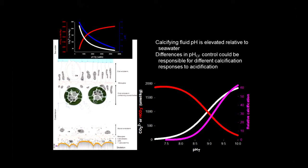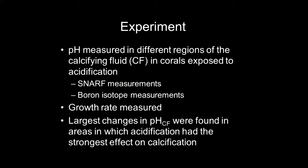Certainly, corals are able to upregulate pH under a wide range of external CO2 conditions, but clearly there are variations in how calcification responds. So the question is: how variable is this pH regulation in corals? To investigate this, we used two techniques — in-situ measurements of pH using a fluorescent indicator SNARF by the Monaco group, and boron isotope composition measurements on the same specimens in different parts of the skeleton. We also measured growth rates in different regions of the coral. What I will show is that in regions with the largest changes in calcifying fluid pH, you also see the largest changes in calcification rate.